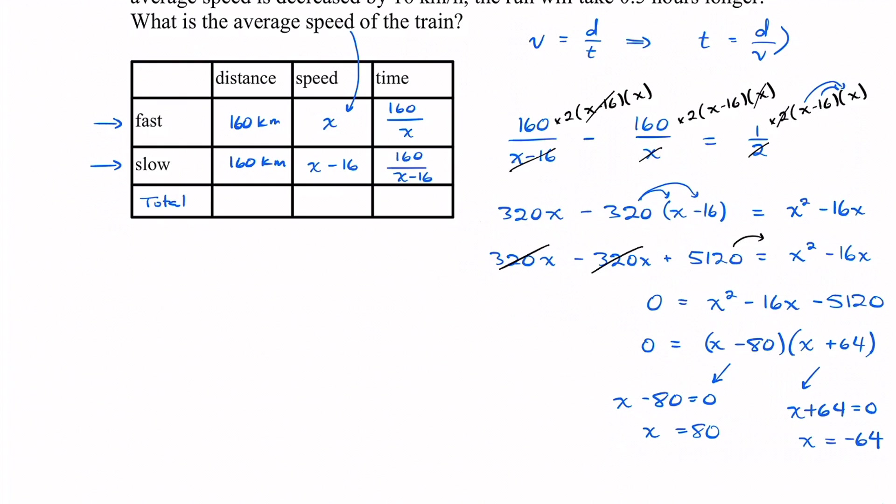Now with these two solutions that we got, 80 and negative 64, our x, this x represented speed. So we can't have a negative speed. We're going to have to omit that. And some of you might be thinking, well in physics you can have, say, a negative speed. That would be velocity, and then it just tells you you're going in the other direction. But in this case we can't have any negative values.